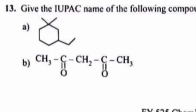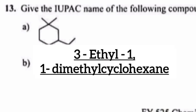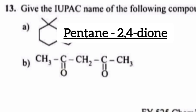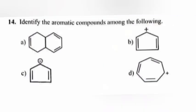Question 13: Give the IUPAC name of the following compounds. Answer: a) 3-ethyl-1,1-dimethylcyclohexane, b) pentane-2,4-dione. Question 14: Identify the aromatic compounds among the following. Answer: c and d.